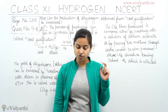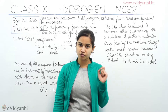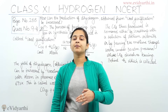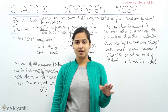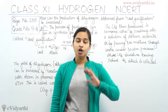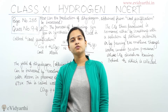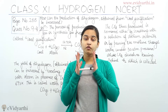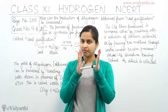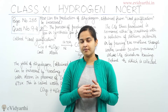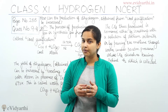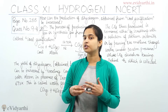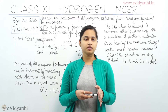Now, the question asks how to increase the production of dihydrogen from coal gasification. The answer is: the dihydrogen produced in syngas is fine, but the carbon monoxide that is also produced can be reacted with steam at about 673 Kelvin in the presence of iron chromate as a catalyst, and we will obtain carbon dioxide and dihydrogen. From this, we can increase the production of dihydrogen from coal gasification.